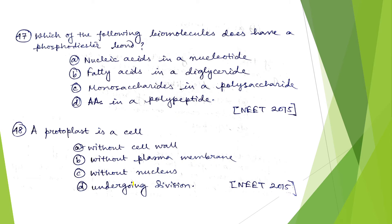Coming to question number 47: which of the following biomolecules has a phosphodiester bond? We know that the phosphodiester bond is found in DNA or RNA. It is found between the third carbon of the ribose sugar or deoxyribose sugar with the phosphate group. So the phosphodiester bond is found in nucleic acids. In fatty acids in a diglyceride, an ester bond is found; in monosaccharides in a polysaccharide, a glycosidic bond is found; and in amino acids in a polypeptide, a peptide bond is found.